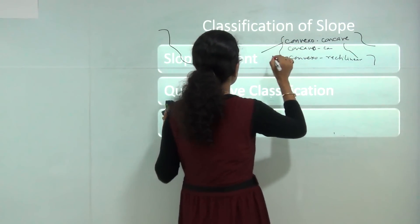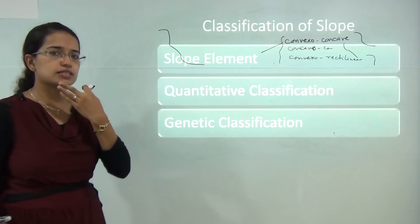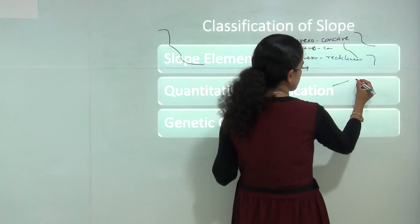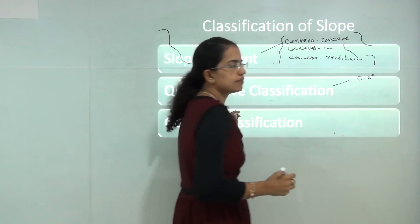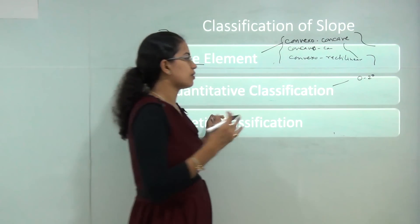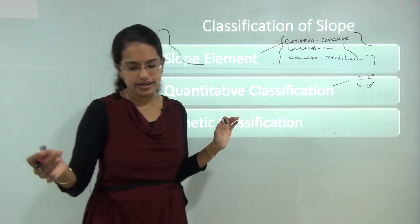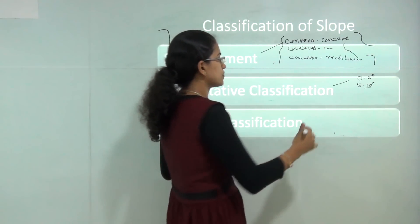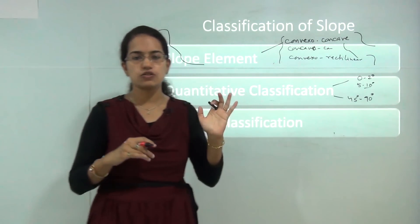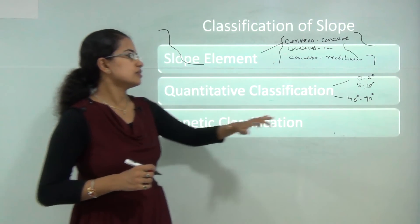The next is quantitative classification, which talks about the inclination. If the slope is very level to gentle, it is 0 to 2 degrees; gentle is 2 to 5 degrees; moderate is 5 to 10 degrees; steep is 10 to 18 degrees; and vertical slope is 45 to 90 degrees. Among these, near 45 degrees we call it precipitous, and around 90 degrees we call it a wall-like slope.